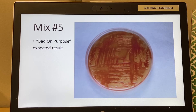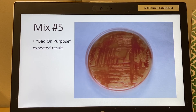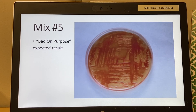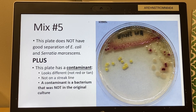I'm also going to have you do a plate that is bad on purpose so you can see the differences. This is the plate where you do the streaks but don't incinerate in between — look at what a huge difference it makes. There's no dilution whatsoever and you can't see any individual colonies or good separation. The key is you have to incinerate the loop in between streaks or you're not going to get the desired result.